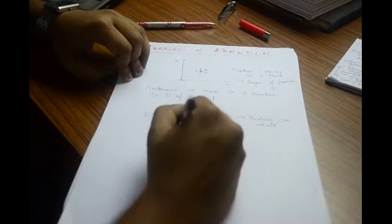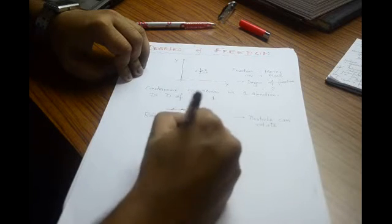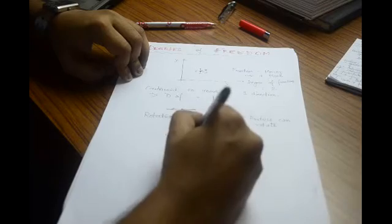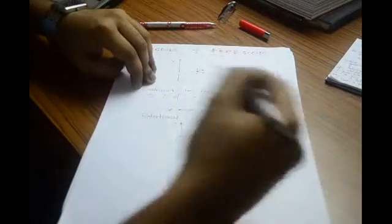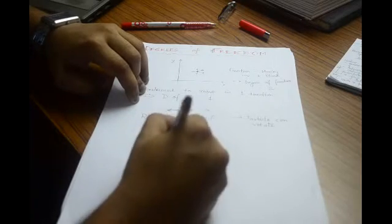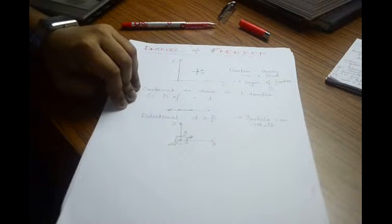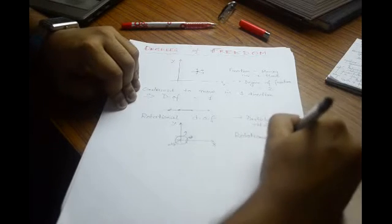A particle can rotate about the x axis, the y axis, or the z axis. If you have the x, y, and z axes, a ball placed there can rotate about the x axis, rotate about the y axis, and also rotate about the z axis — which comes out of the plane. These are called rotational degrees of freedom.